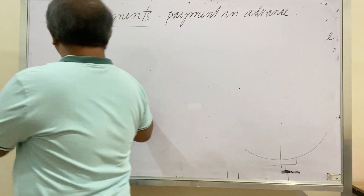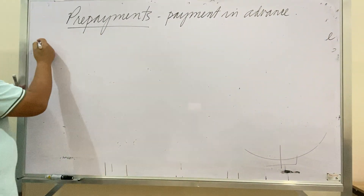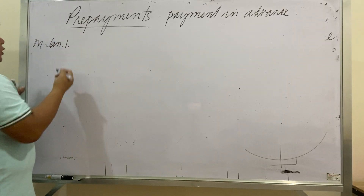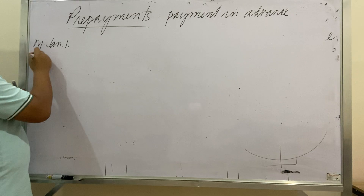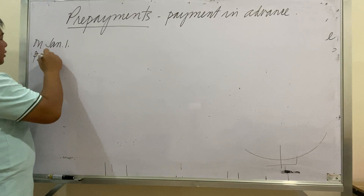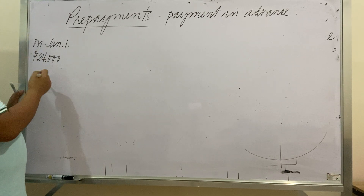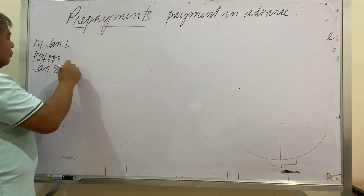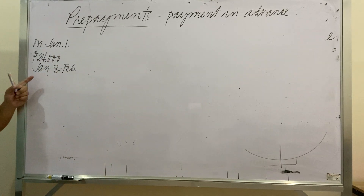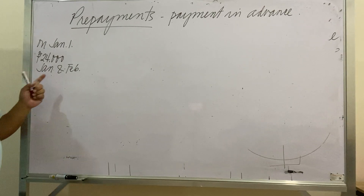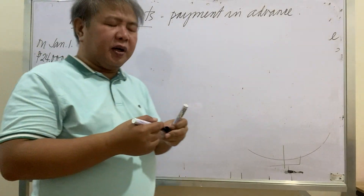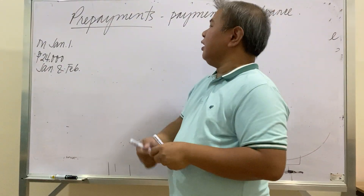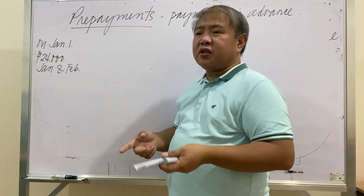Let's look at an example. Say on January 1, you paid 24,000 representing two months' rent — for the months of January and February.